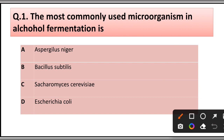Question number one: The most commonly used microorganism in alcohol fermentation is: A) Aspergillus niger, B) Bacillus subtilis, C) Saccharomyces cerevisiae, D) Escherichia coli. The correct answer is option A, Aspergillus niger.